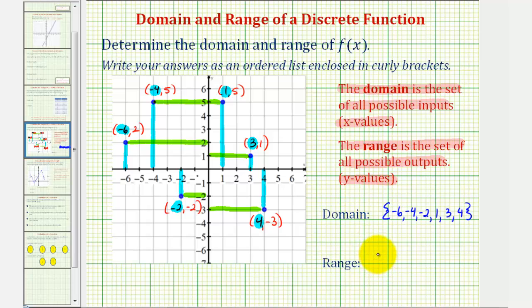And the range, from least to greatest, we'll work our way from the bottom to the top. So the range will be -3, -2, 1, 2. Notice how we have two points with a y-coordinate of five. We're only going to list five once in the range. So again we have {-3, -2, 1, 2, 5}.